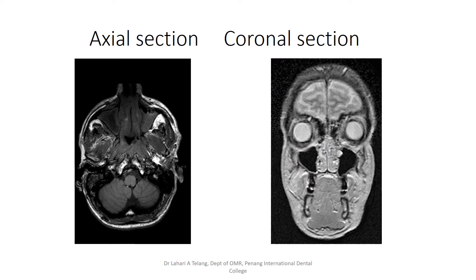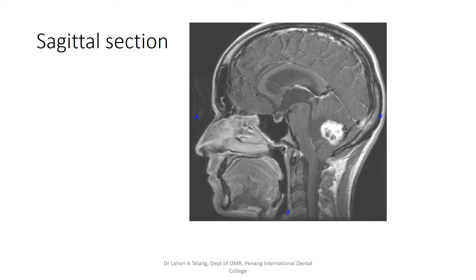When you look at the scans, the sections look very similar to a CT scan for someone who is a novice, but when you look at them more clearly, you will understand that there are differences. This is an axial MRI, this is a coronal section, and this is a sagittal section. The key difference is that there is much better soft tissue visualization in an MRI scan.